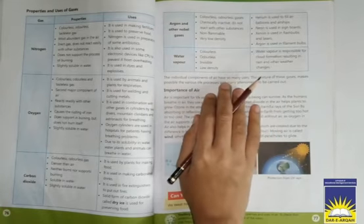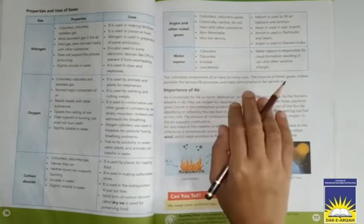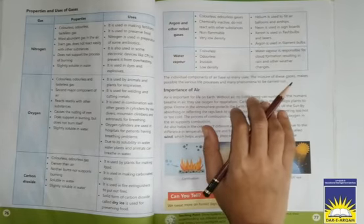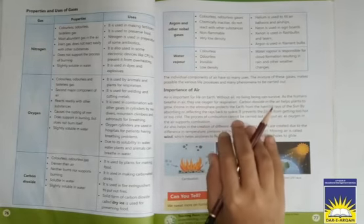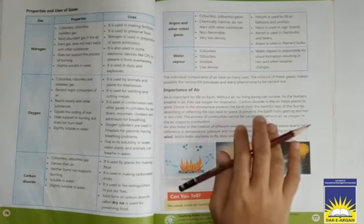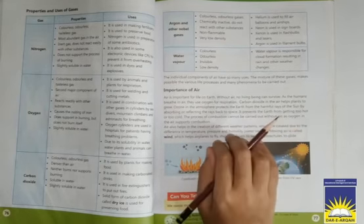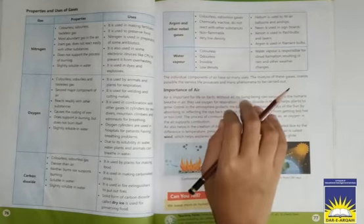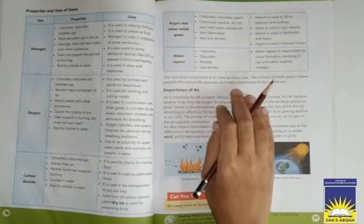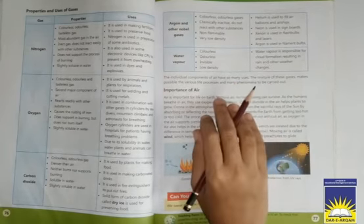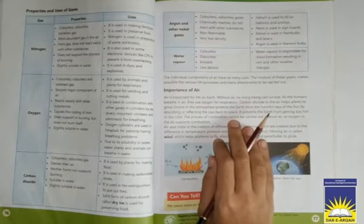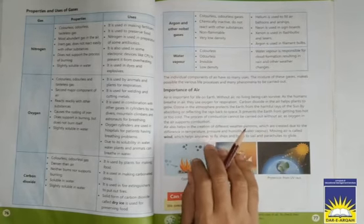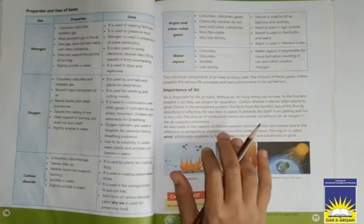Now our last topic is importance of air. As we already know air is a mixture of gases. Air is very important for us. Living beings cannot survive without air because they use oxygen for respiration. Plants use carbon dioxide for photosynthesis. Similarly ozone is also very important for us. It protects us from harmful UV rays of the sun. Ozone also helps to maintain Earth's temperature.